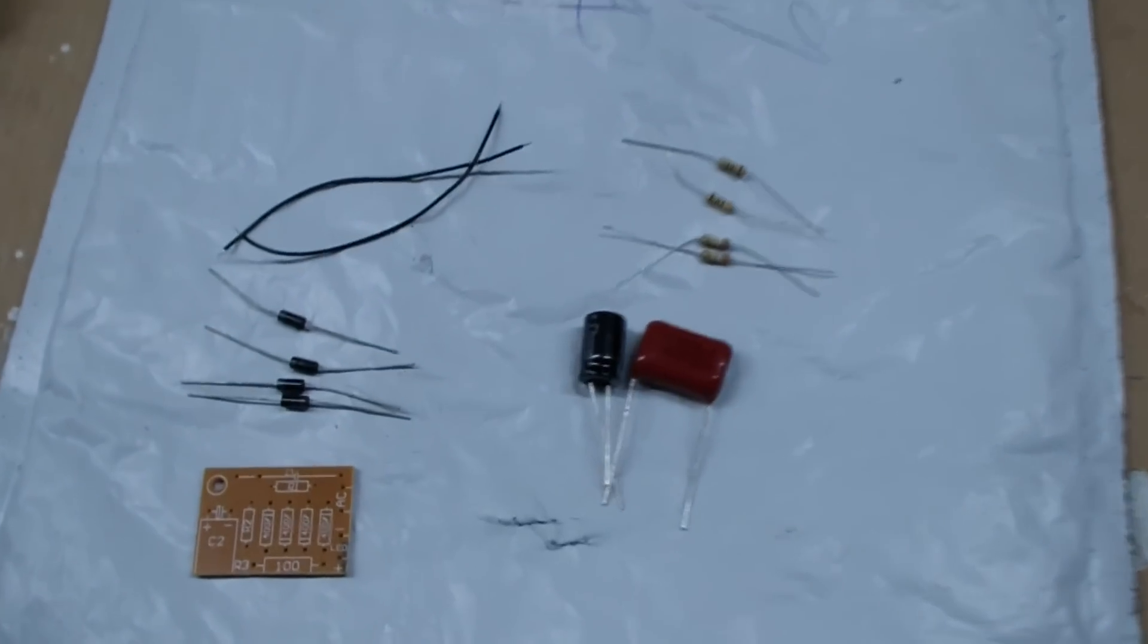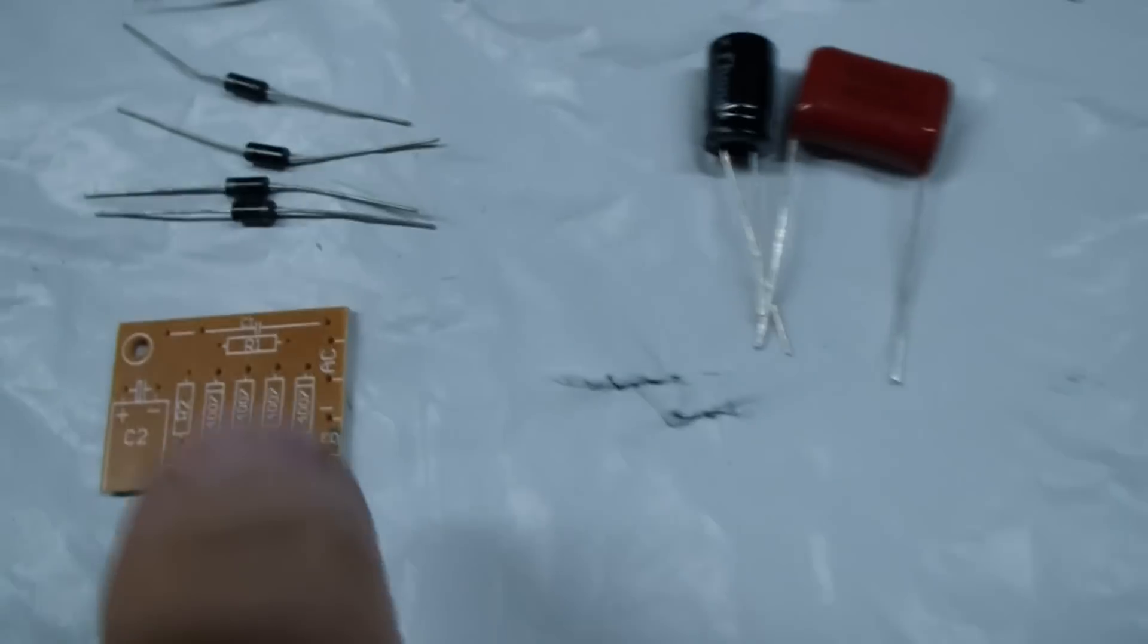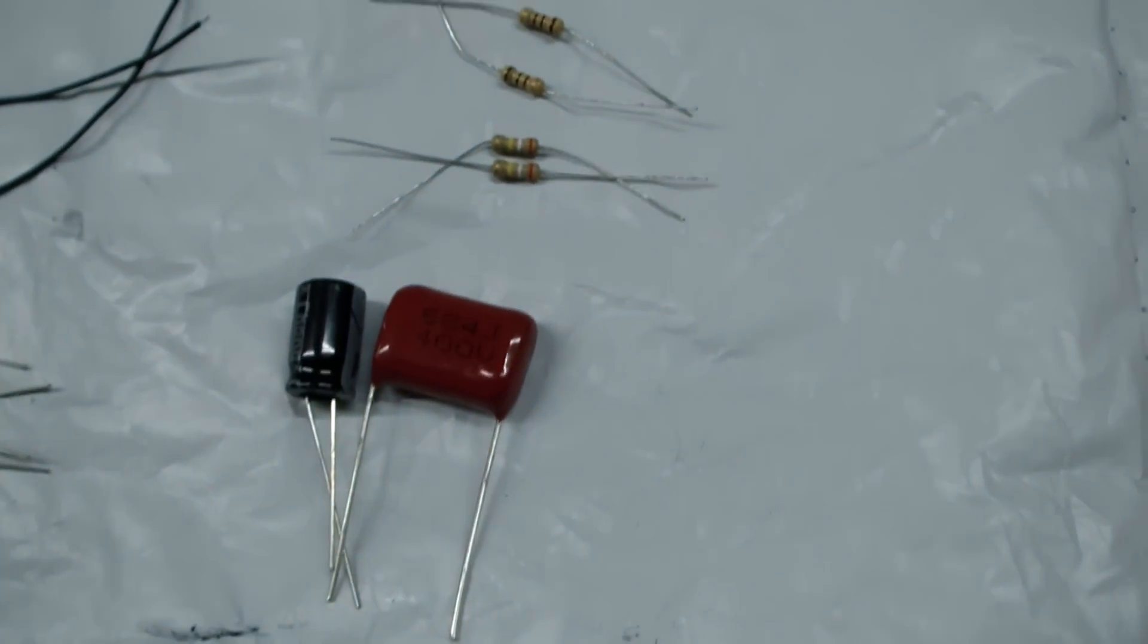I opened the package, and here's what we found. We can see we've got a small circuit board. It is silkscreened, so that should help out a little. We've got four diodes, an electrolytic capacitor, and a regular capacitor.